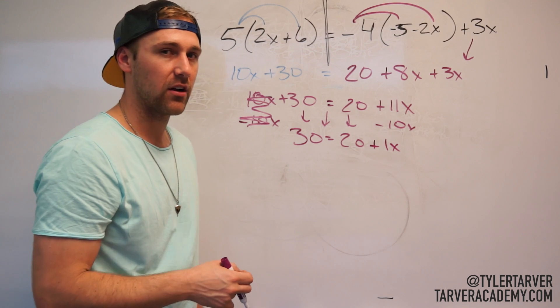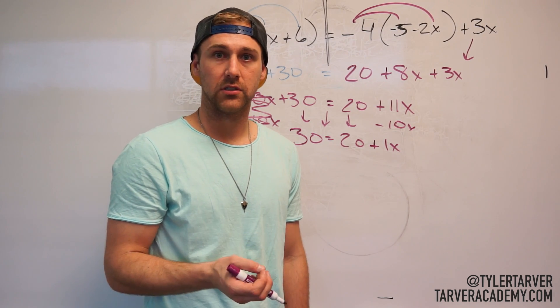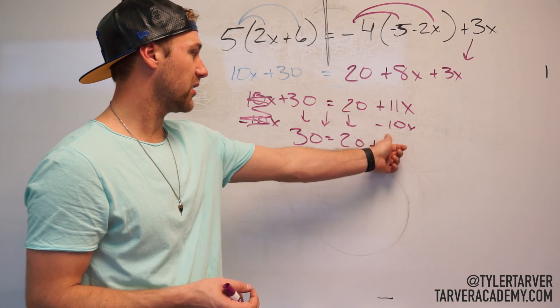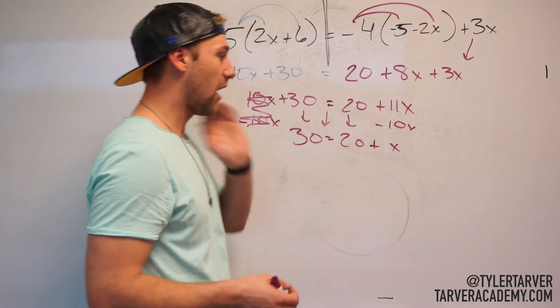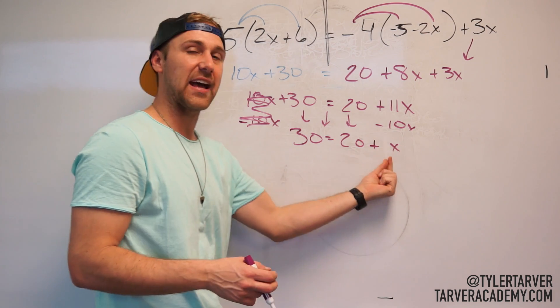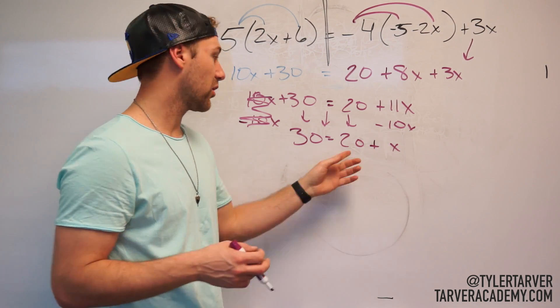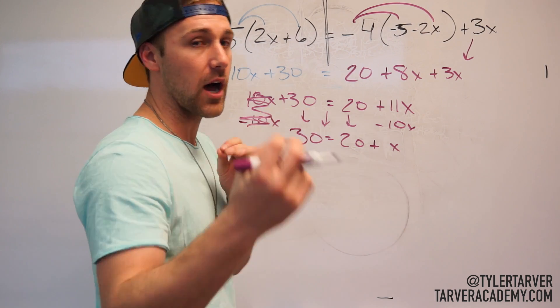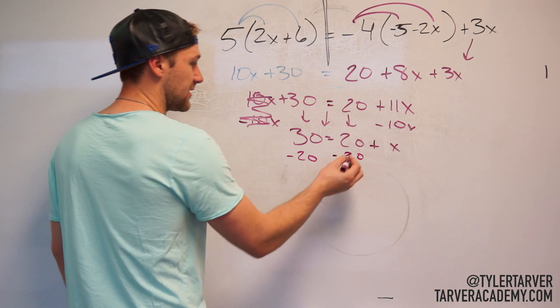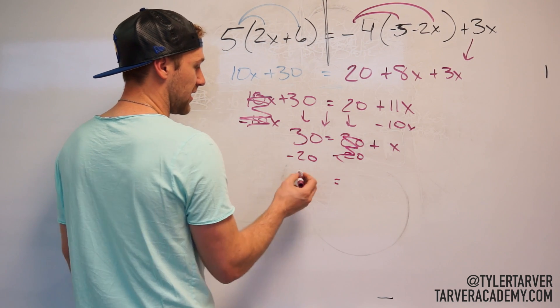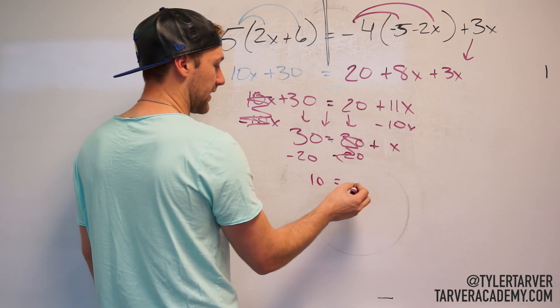Now, do I need that 1 there? What's anything times 1? Itself. So you don't have to put that 1 there. I could take that off just to make it look prettier because I don't need that 1. All right, now I got to get my x by itself. The last step to get x by itself is to get rid of that 20. Now, I'm going across the equal sign so I have to do the opposite. It's a positive 20. I subtract 20 from both sides. I subtract it here. That becomes zero. I subtract it here. That is 10. So 10 equals x.